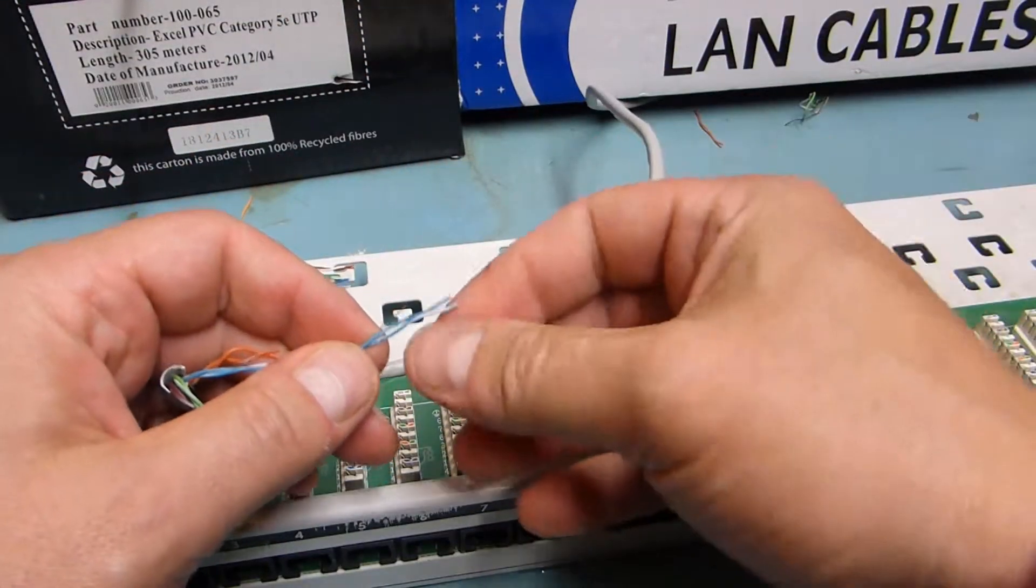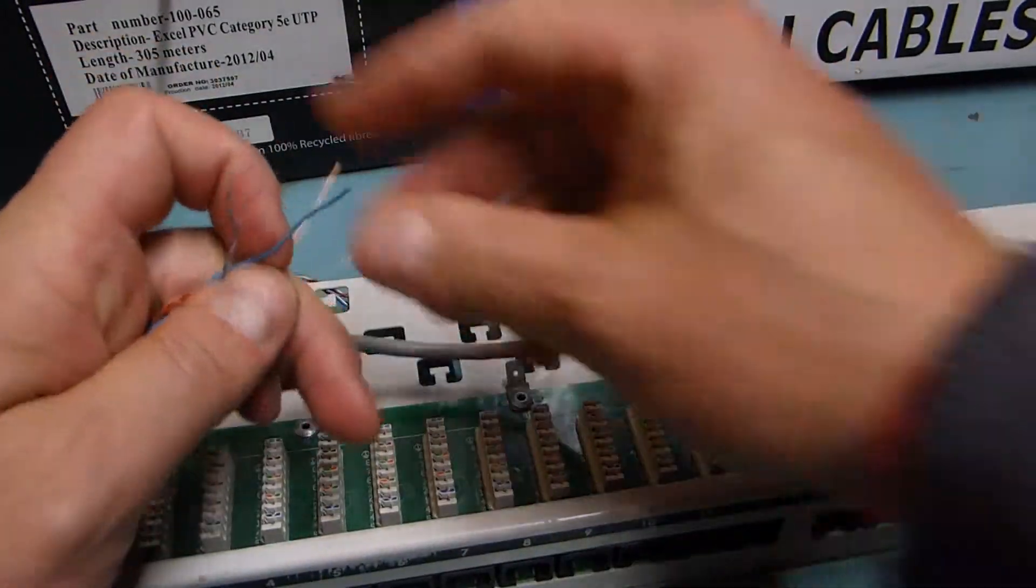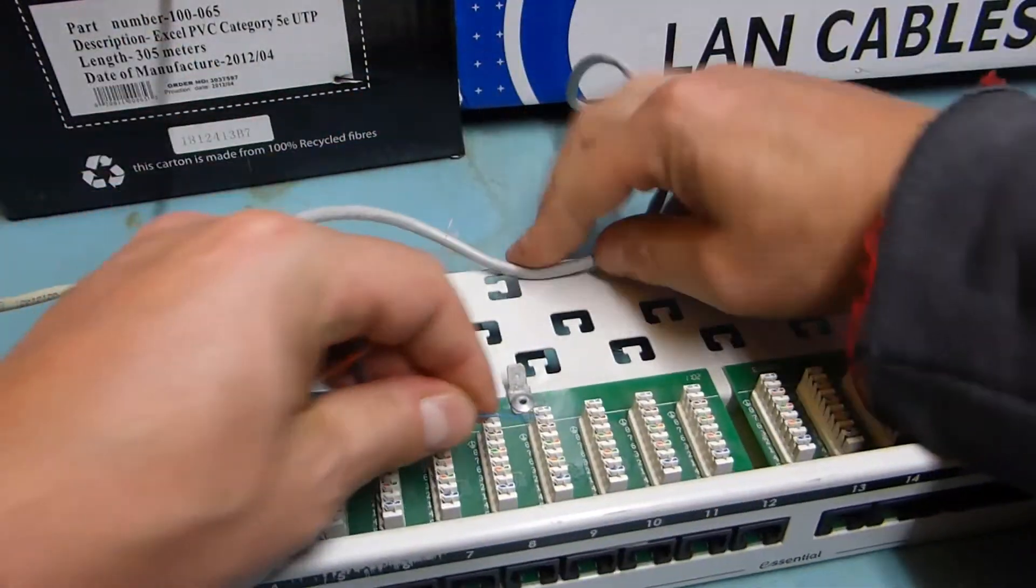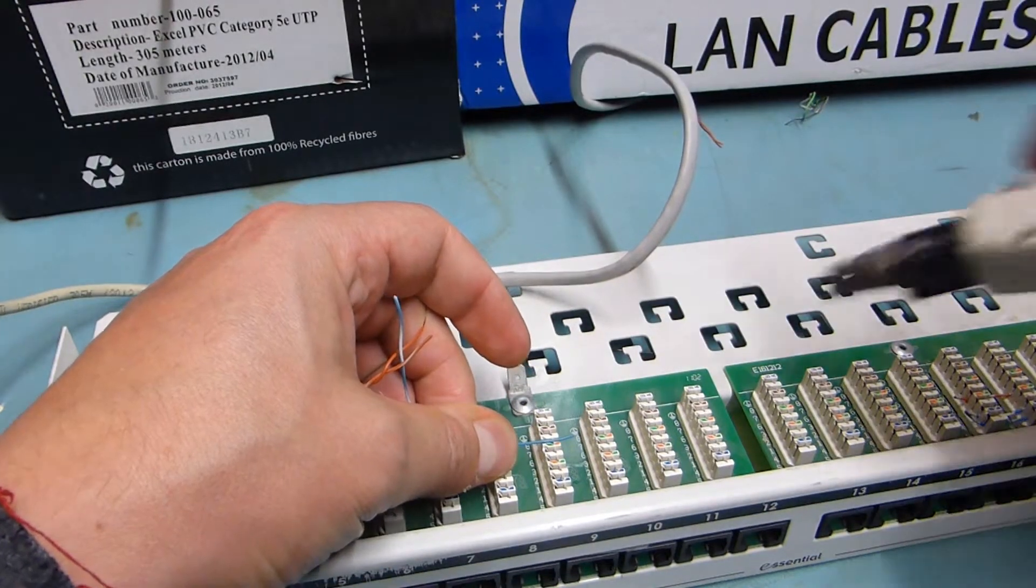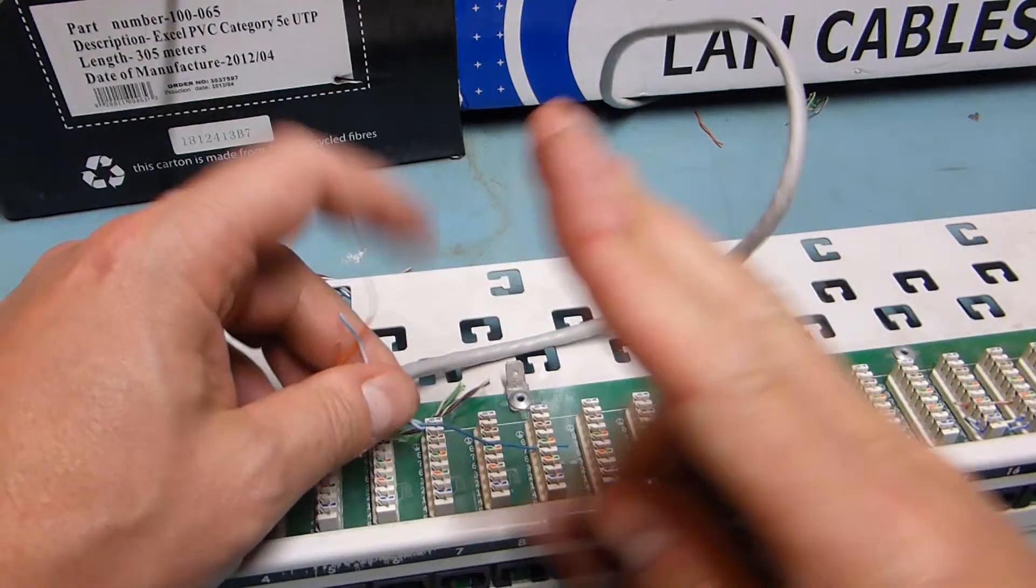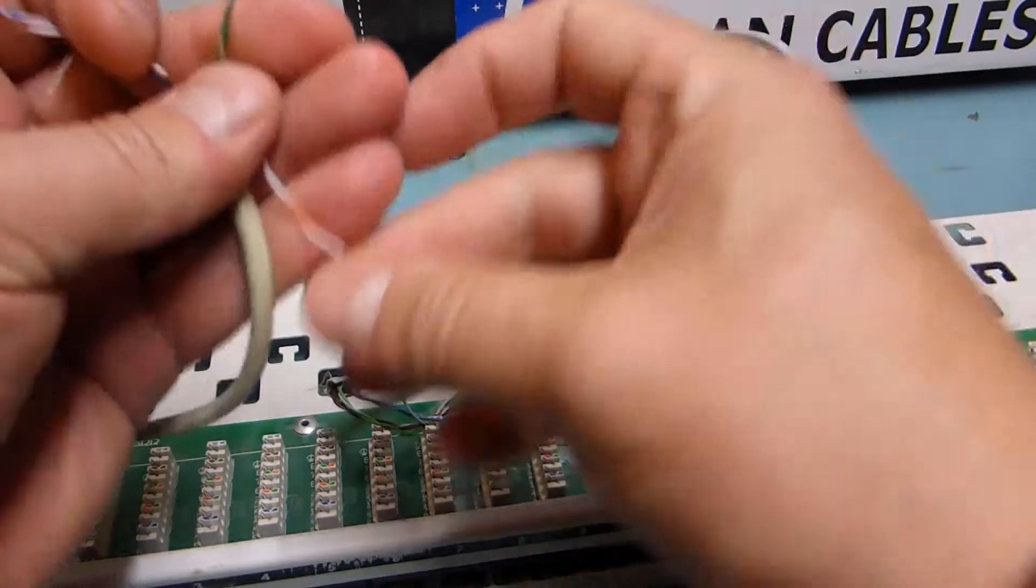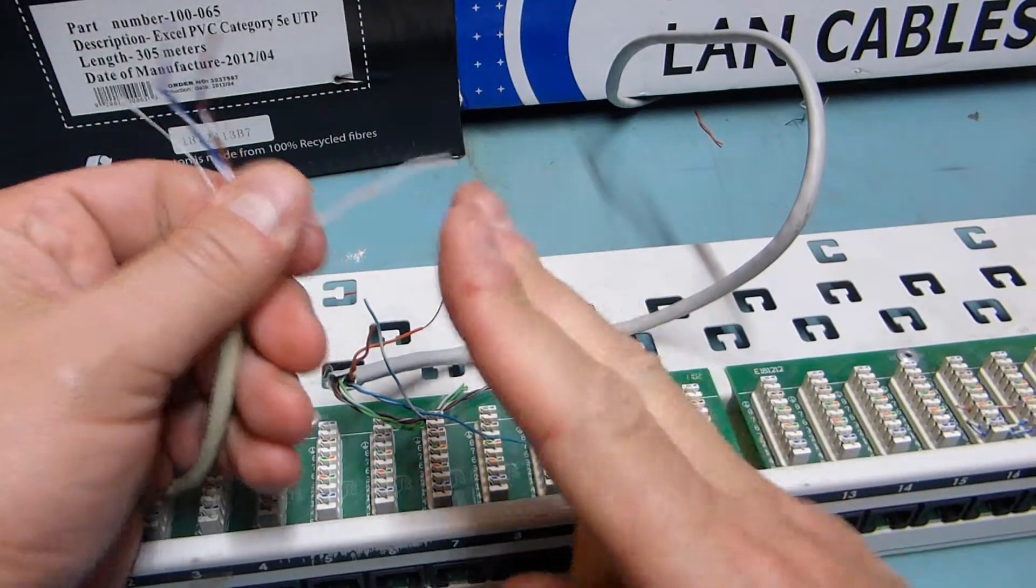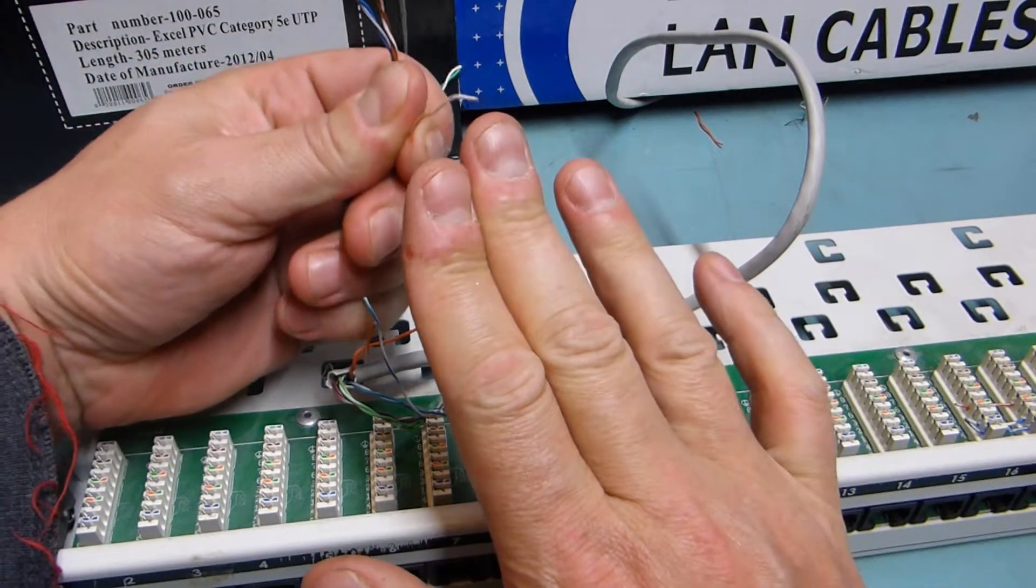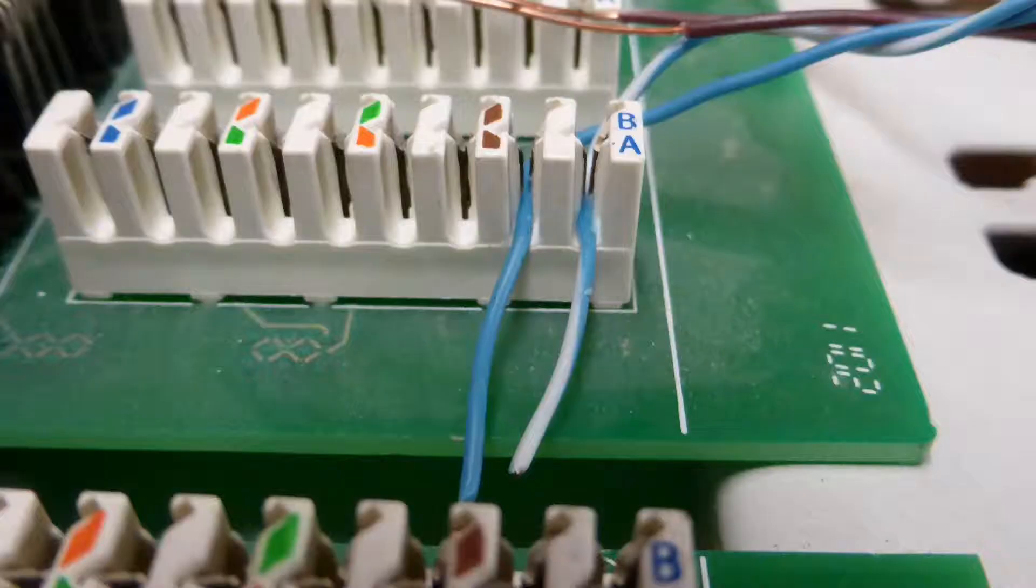Now a patch panel has all of these slots on there and you use something called a punch-down tool and you punch that down between the pins and effectively it's a pair of jaws. So the wire comes along and you use the tool to punch it down and it effectively cuts through the insulation and digs into the wire.